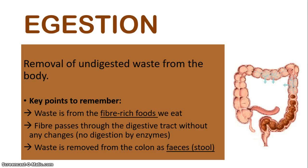These foods are rich in fiber, meaning they contain a lot of cellulose — the material that comes from plants. Cellulose cannot be digested because we don't have the enzymes to break it down the way cows do when they eat grass. The fiber passes through the digestive tract without any changes occurring to it — there's no digestion by enzymes. This waste is then removed from the colon as feces, commonly referred to as stool. That is what ingestion is all about: removing undigested food material from the colon out of the body as feces.